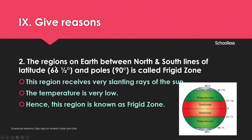The regions on Earth between 66 and a half degrees north/south and the poles are called the Frigid Zone. This extends from 66.5 degrees north to 90 degrees north at the poles. The temperature is very low in this region.